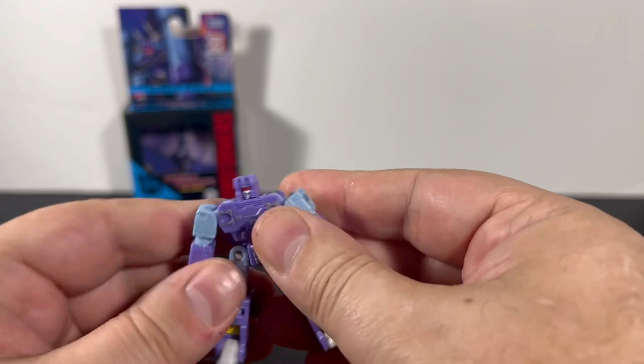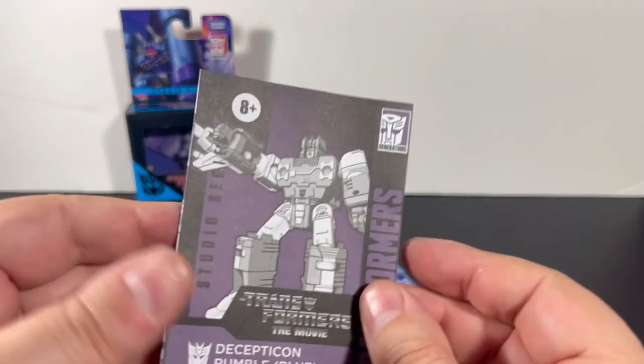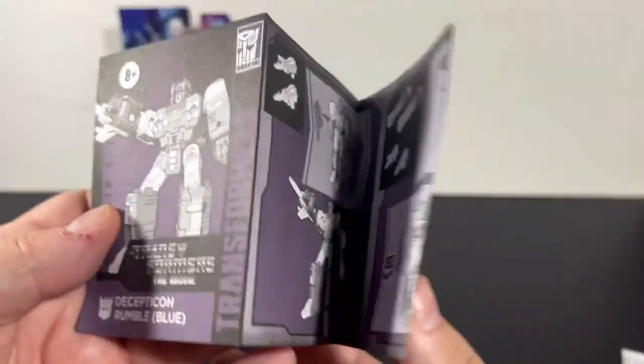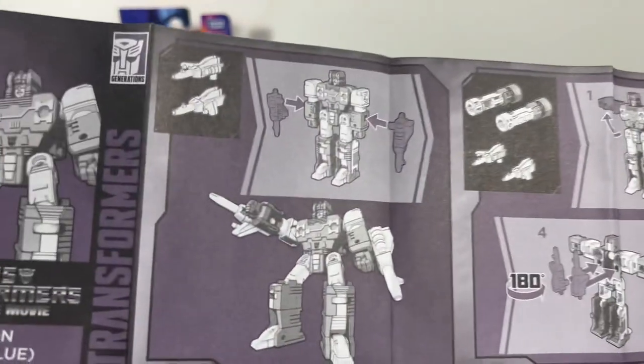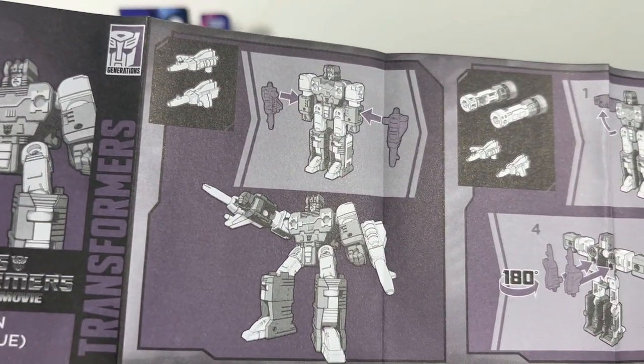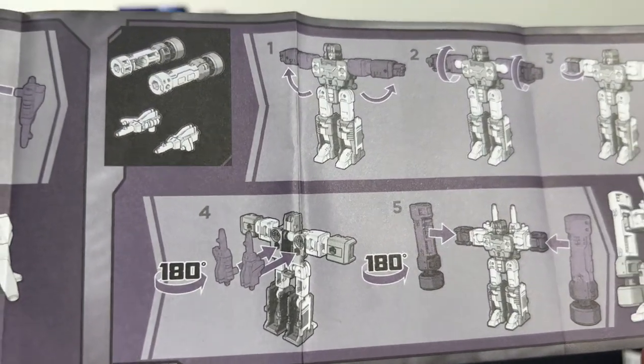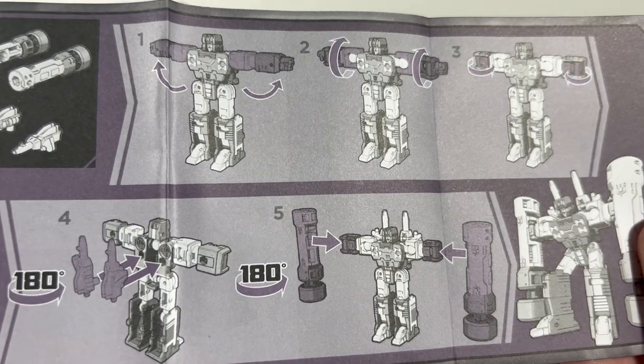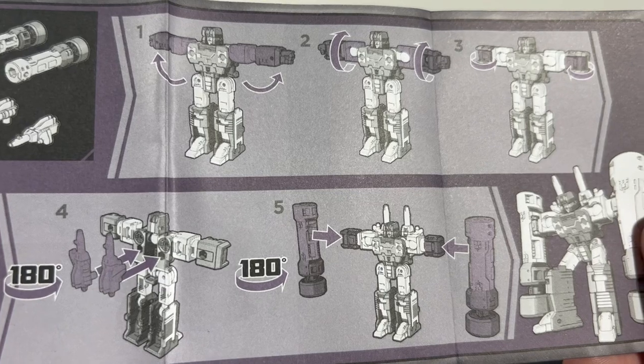So this is cool, neat. Let's look at the instructions here. Instructions. So they're saying the guns can go there. I bet the guns can go on his back. Yeah, there they go, they can go on his back. And then you're gonna twist the arms up, fold the hands in, and then clip the...